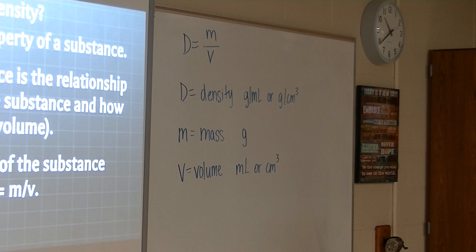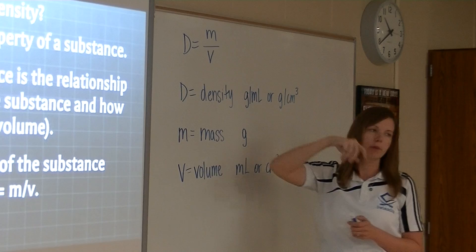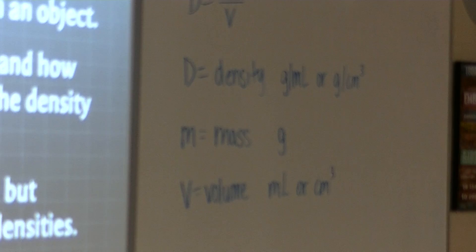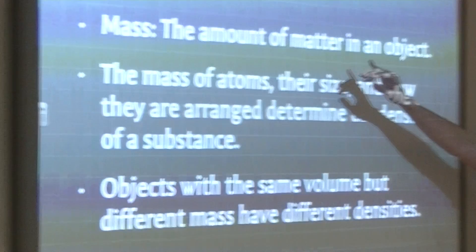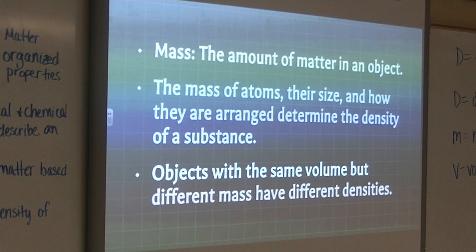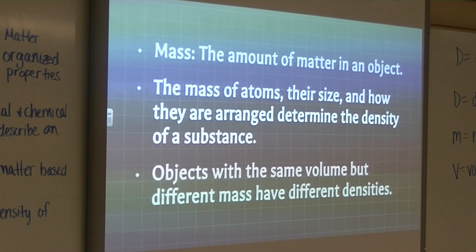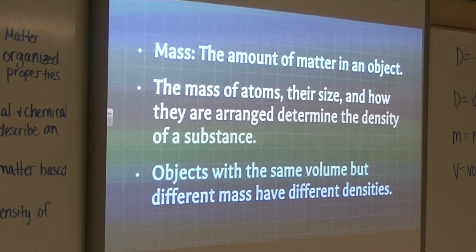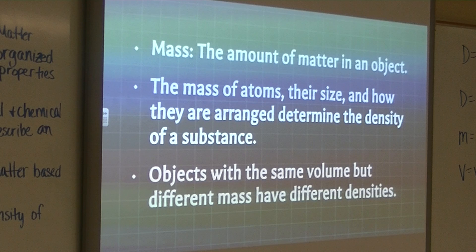We're going to be calculating density using this formula. We're going to use the other two versions of the formula as well — I'll give you that in a few minutes. First, a couple more definitions. Mass is the amount of matter in an object. So when we talk about how dense something is, we're talking about how much matter is compacted into a certain space, which is your volume. The mass of atoms, their size, and how they are arranged determines the density of a substance. If they're really closely packed together in a small space, it's going to be more dense. Objects with the same volume but a different mass will have different densities — it depends on how tightly packed the atoms are and what their mass is.